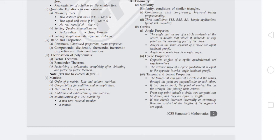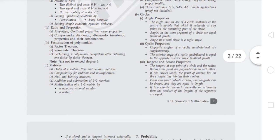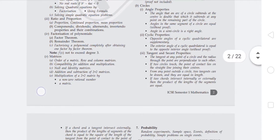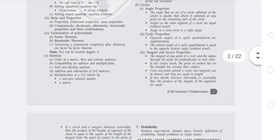Ratio and Proportion: you have to learn proportion, continued proportion, mean proportion, componendo, dividendo, alternando, invertendo properties and their combinations. Factorization of Polynomials includes factor theorem, remainder theorem, and factorizing a polynomial completely after obtaining one factor by factor theorem.